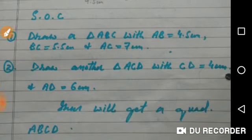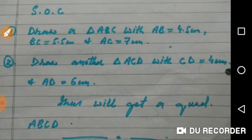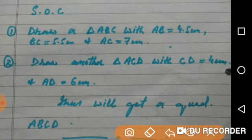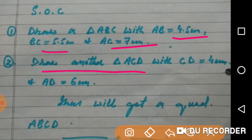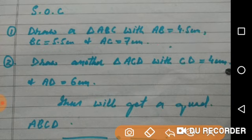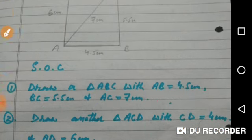After drawing this quadrilateral, you need to write the steps to show how you have drawn it. We have drawn it with the help of 2 triangles. So we write: draw a triangle ABC with AB 4.5 cm, BC 5.5 cm, AC 7 cm. Similarly, draw another triangle ACD with CD 4 cm and AD 6 cm. When we join all these sides together, we will get quadrilateral ABCD.